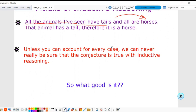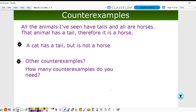So what's the point of even knowing what inductive reasoning is? We can come up with a counterexample, and that will definitely disprove that conjecture. All the animals I've seen have tails and are horses. That animal has a tail, therefore it's a horse. But a cat has a tail and it's not a horse. We've just found a counterexample, and that says this conjecture is false. Can you come up with other counterexamples? I'm sure you can come up with a ton.